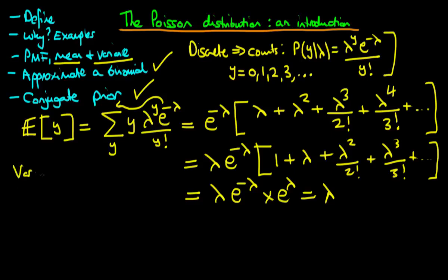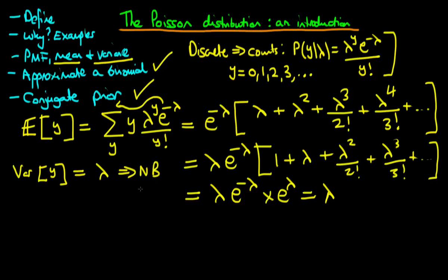The variance can be proven in exactly the same way, and it also equals lambda. Therefore the Poisson distribution is only appropriate when the mean and variance are very similar. If the variance is greater than the mean — so-called over-dispersed data — it may be more appropriate to use a negative binomial distribution, which we will discuss in future videos.